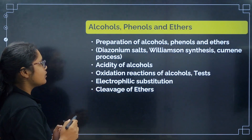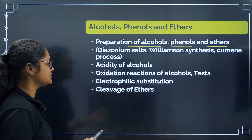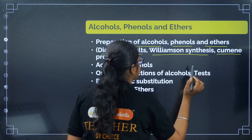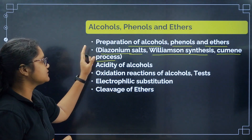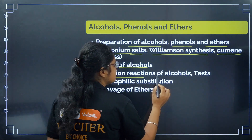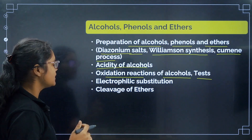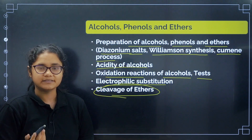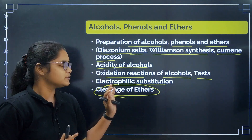Also revise acidity of carboxylic acid — electron withdrawing groups and electron donating groups. Next, in Alcohols, Phenols, and Ethers, focus on preparation methods and their mechanisms, especially from diazonium salts, Williamson synthesis, and the cumene process — these three are the most important methods. Also cover acidity of alcohols, oxidation reactions, tests to separate alcohols, electrophilic substitution, and cleavage of ethers.